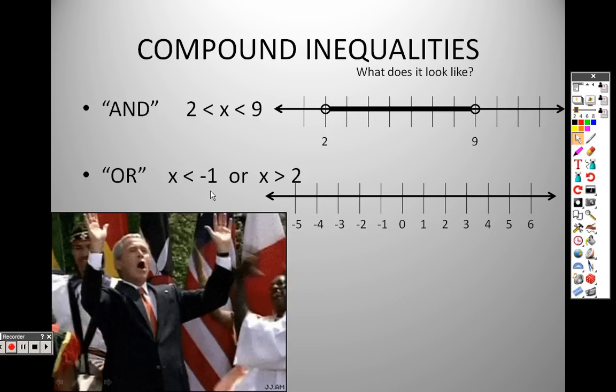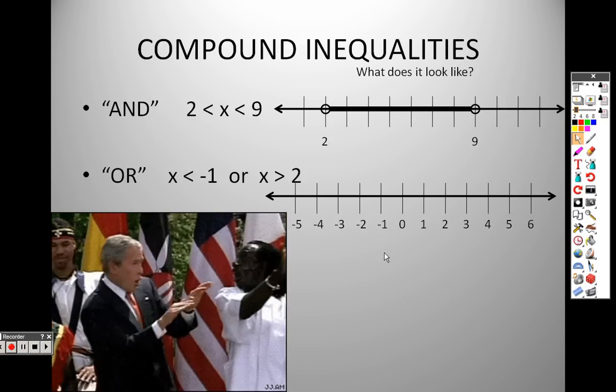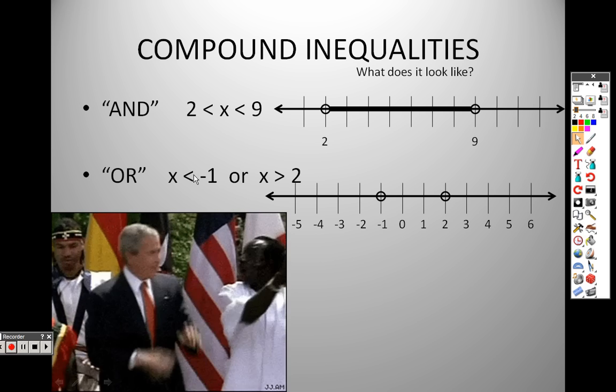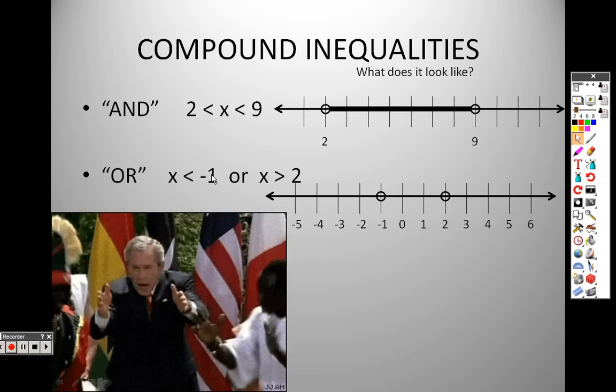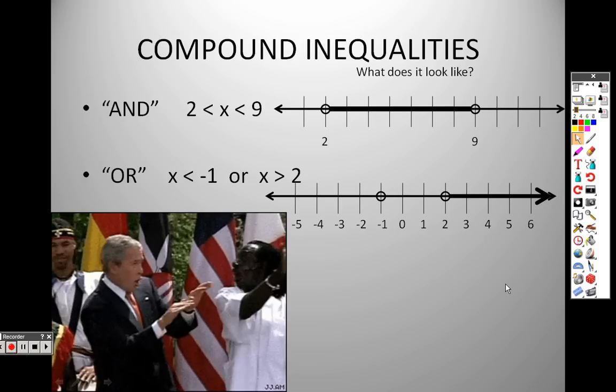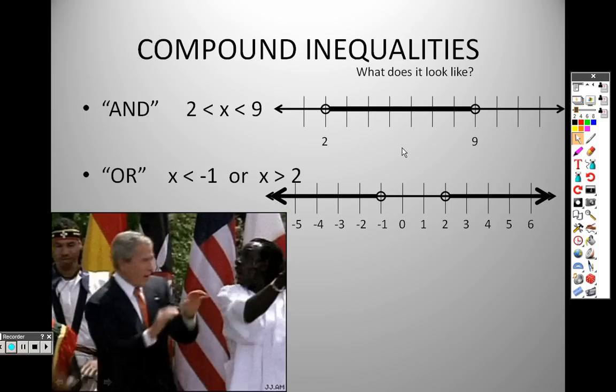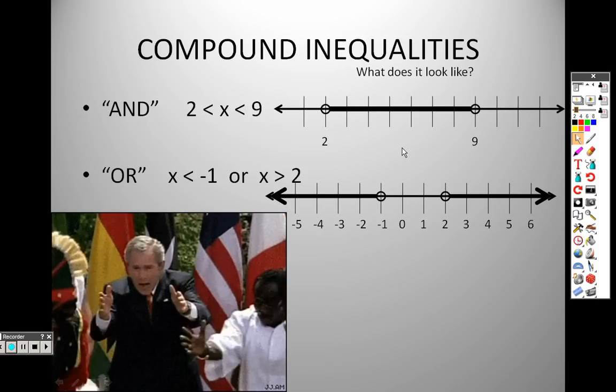Or means it's shaded on either end. So once again, since it's less than or greater than, that means it's an open hole, open hole. And look at it in terms of an arrow. The arrow is facing to the left, so I shade everything to the left. And this arrow is facing to the right, so I shade everything to the right. That's why the middle is open there on the ores.